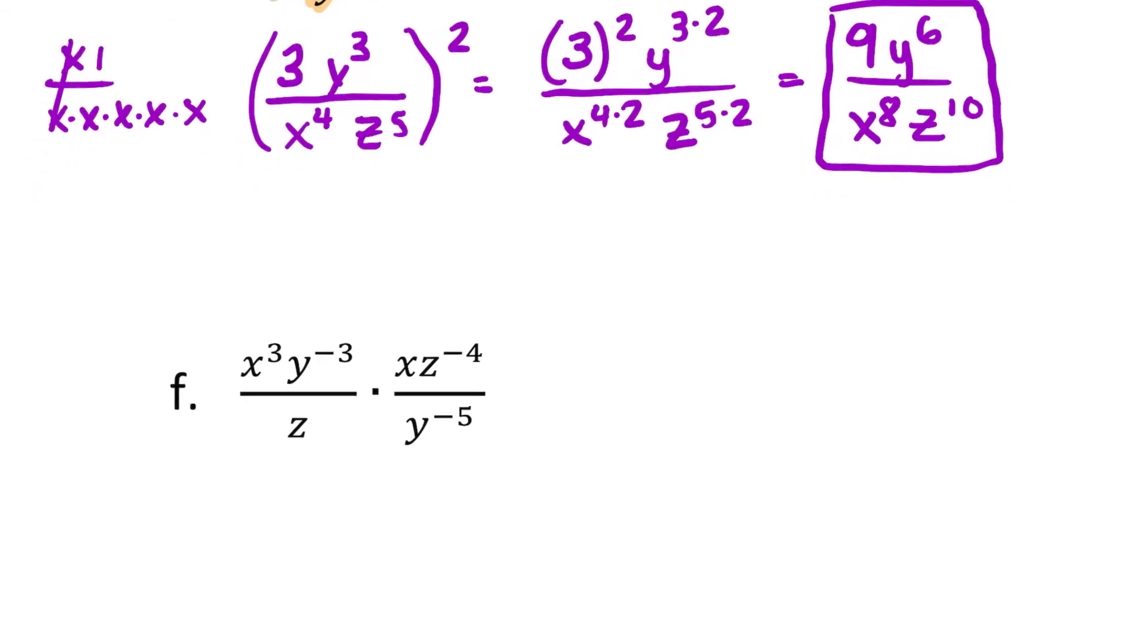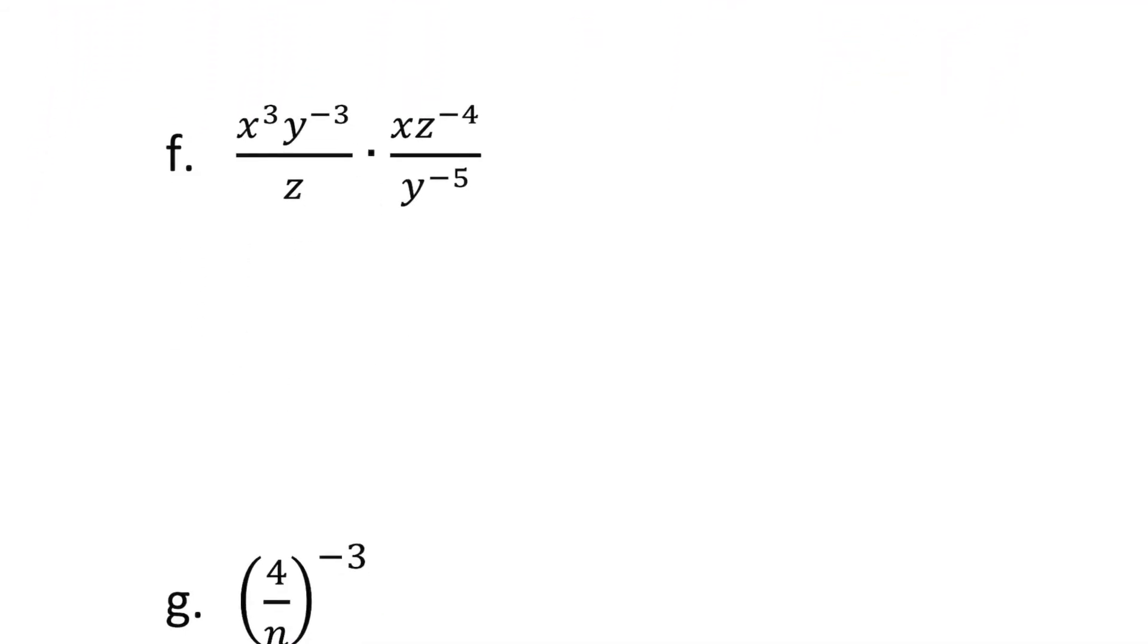A little bit of negative exponents. So remember, a negative exponent is essentially 1 over that. So if you have like a y to the negative third, it's going to be 1 over y to the third, which will flip it to the bottom. And then if you have z to the negative fourth on top, that's going to flip that to the bottom. But the y to the negative fifth on bottom, since it's like 1 over 1 over, you're going to multiply by the reciprocal and it's going to flip it up top. So they swap locations in the numerator and denominator.